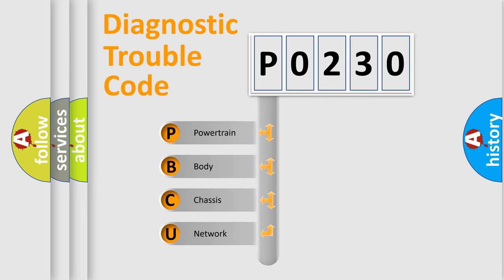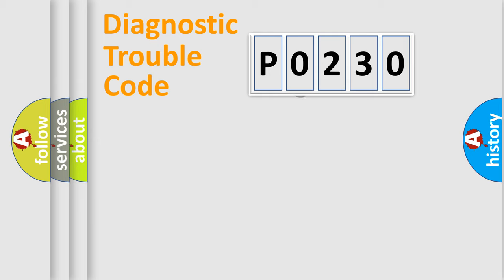We divide the electric system of an automobile into four basic units: Powertrain, Body, Chassis, and Network. This distribution is defined in the first character code.